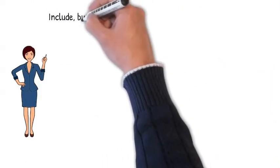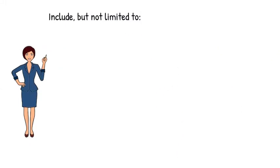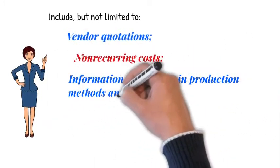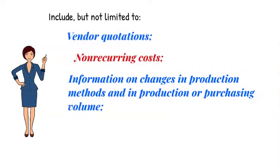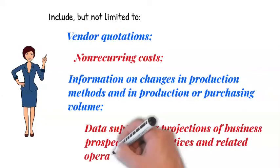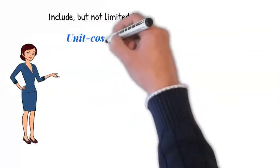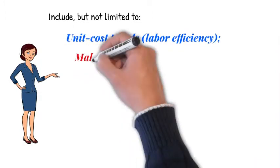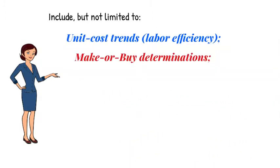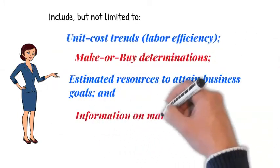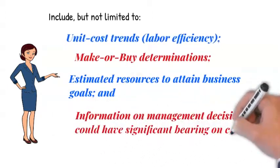They also include, but are not limited to, such factors as vendor quotations, non-recurring costs, information on changes in production methods and in production or purchasing volume, data supporting projections of business prospects and objectives and related operations costs, unit cost trends such as those associated with labor efficiency, make or buy determinations, estimated resources to attain business goals, and information on management decisions that could have a significant bearing on costs.